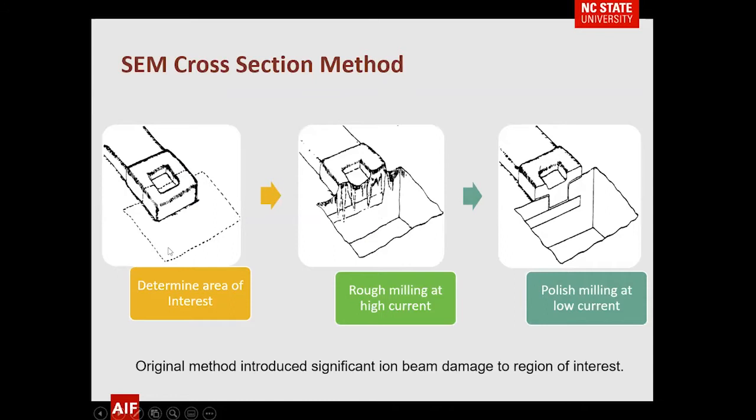Initially this process was done by selecting the area of interest, using high current to remove a lot of material, and then polishing the surface directly with the ion beam. This enabled you to get information from the area, but it damaged the region significantly.